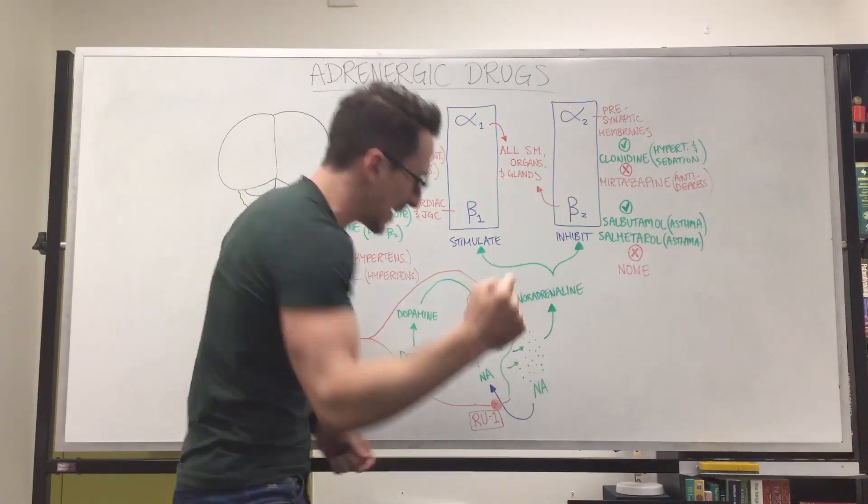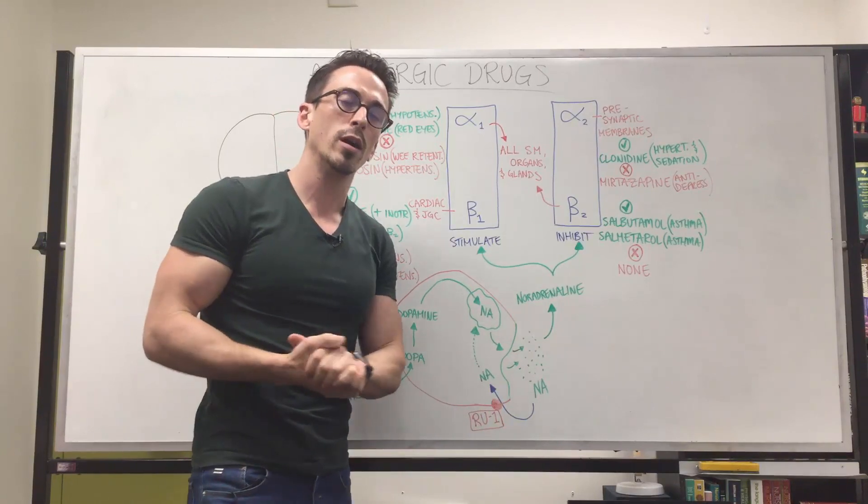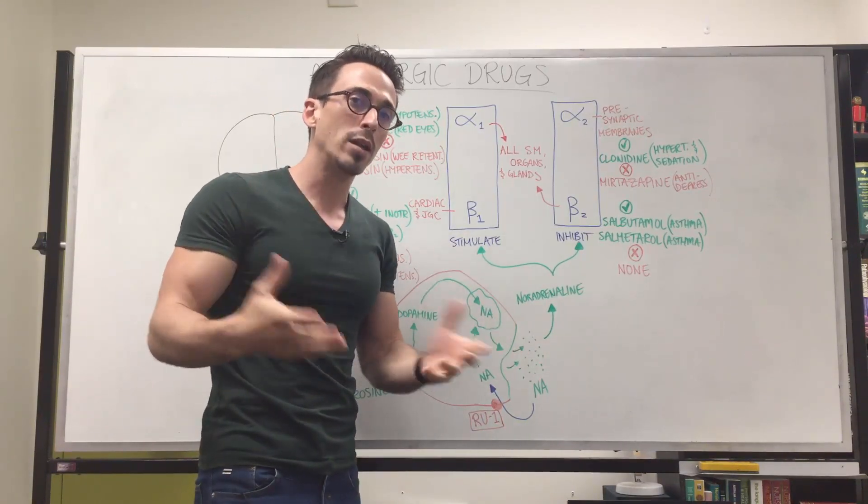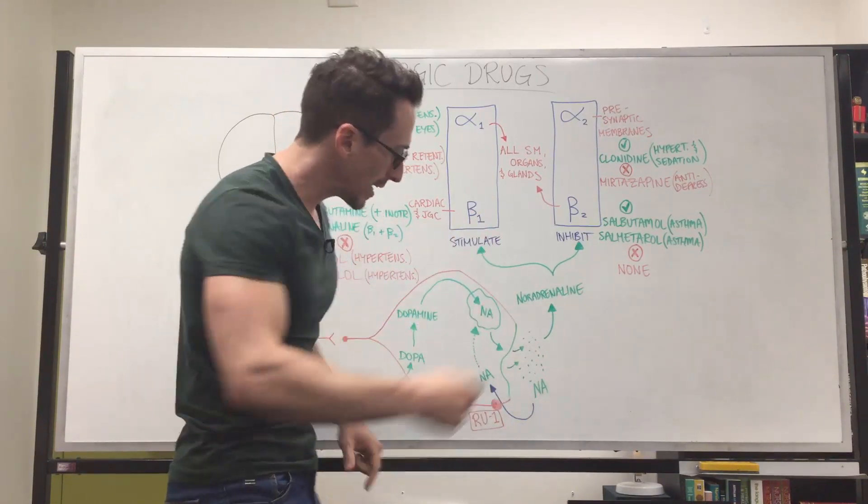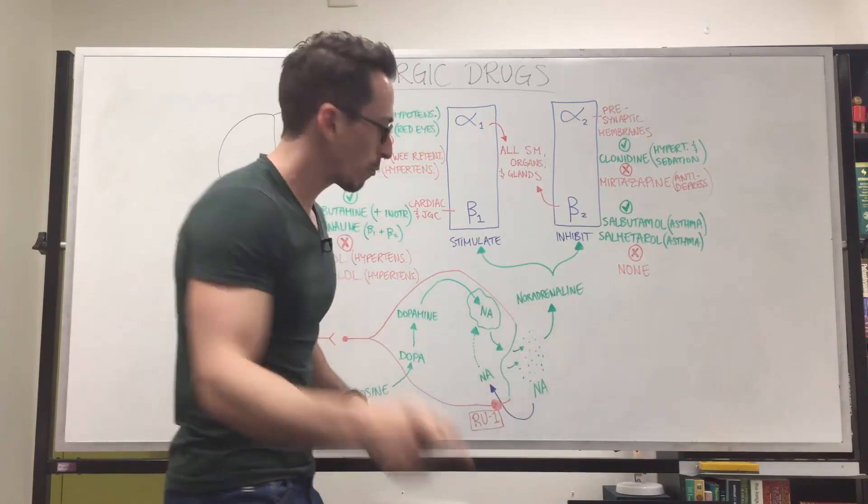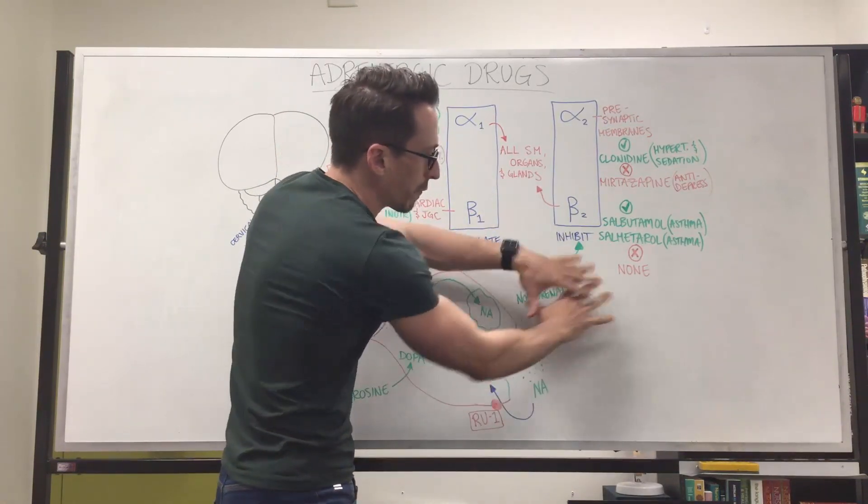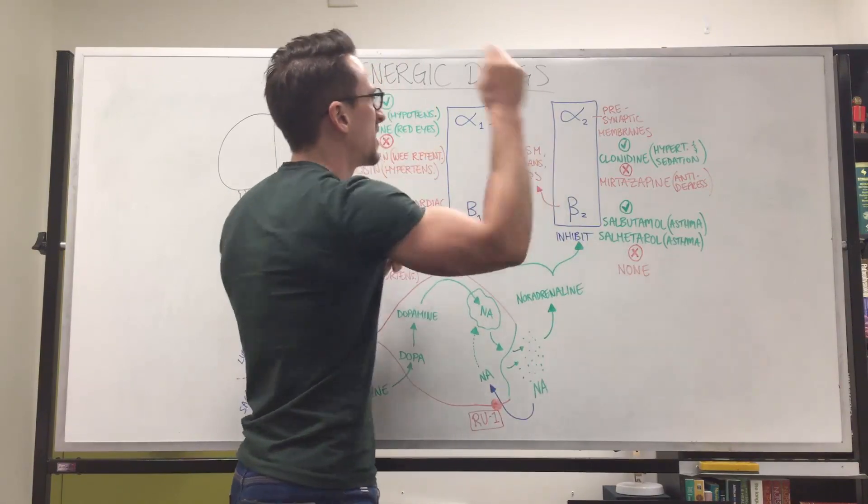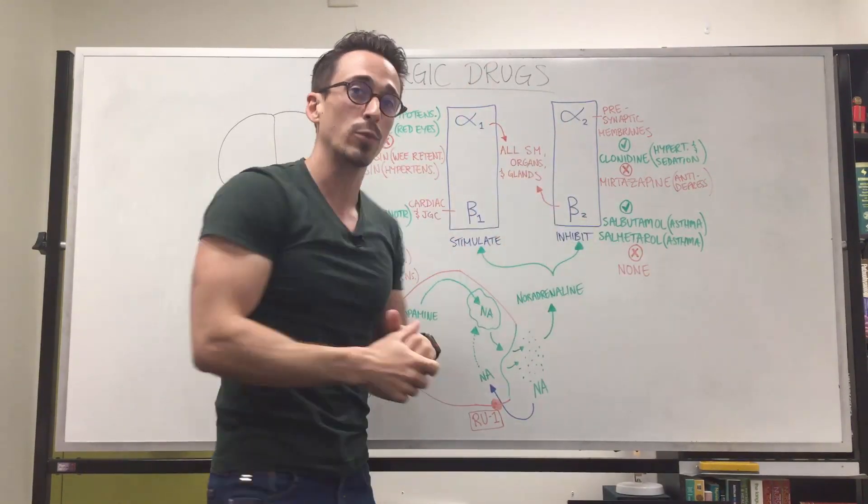There's actually drugs that can inhibit this reuptake-1 mechanism. So one drug is cocaine. Cocaine inhibits reuptake-1 and that means that there's more noradrenaline floating out in the synapse and you get more stimulation of all these particular receptors.